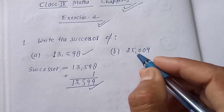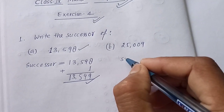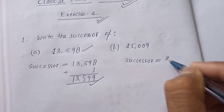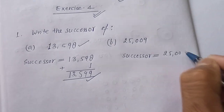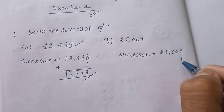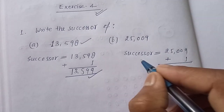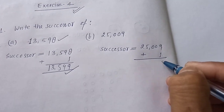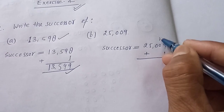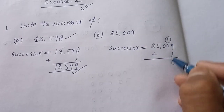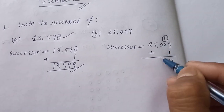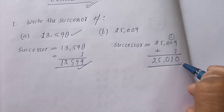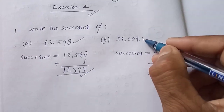Similarly in question B, we need to find the successor of 25,009. Successor equals 25,009 plus 1. Here 9 plus 1 is 10, so 0 comes and carry 1, then 0 plus 1 is 1. So 25,010 will be the successor of 25,009.